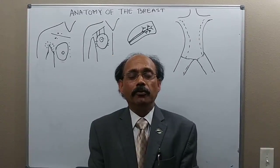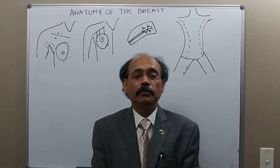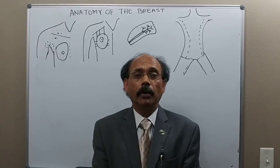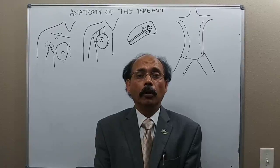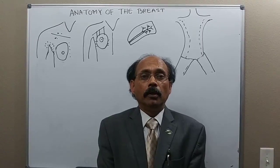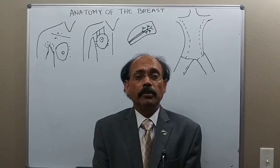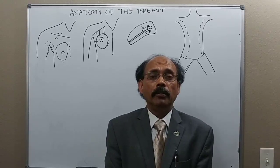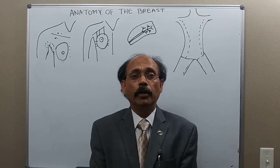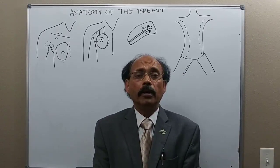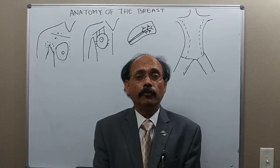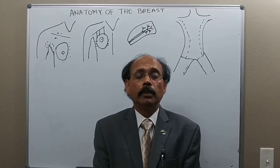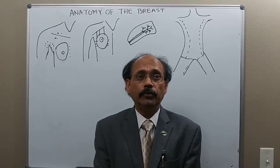Hello, my name is Dr. Diwan S. Raja. Today I will discuss the anatomy of the breast, also called the mammary gland. The mammary gland is present in both male and female, but it is well developed in females after puberty. Mammary glands are modified sweat glands. They are located in the superficial fascia of the pectoral region.